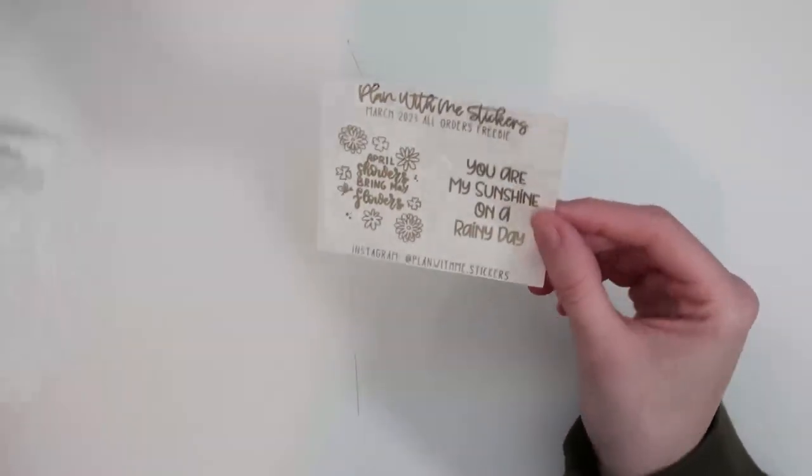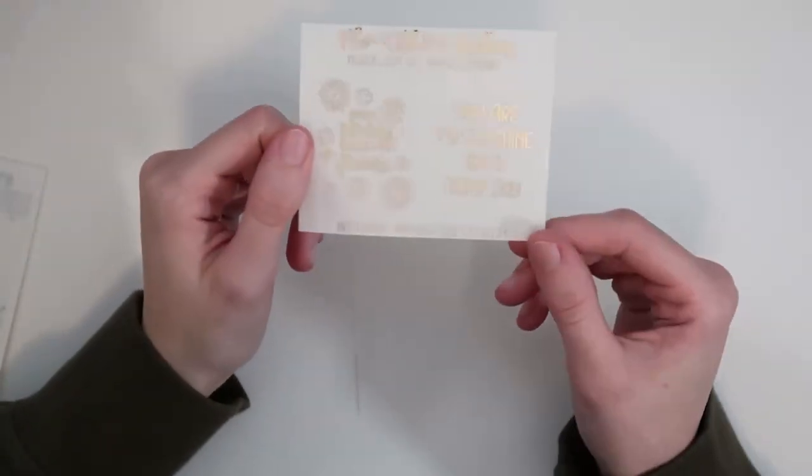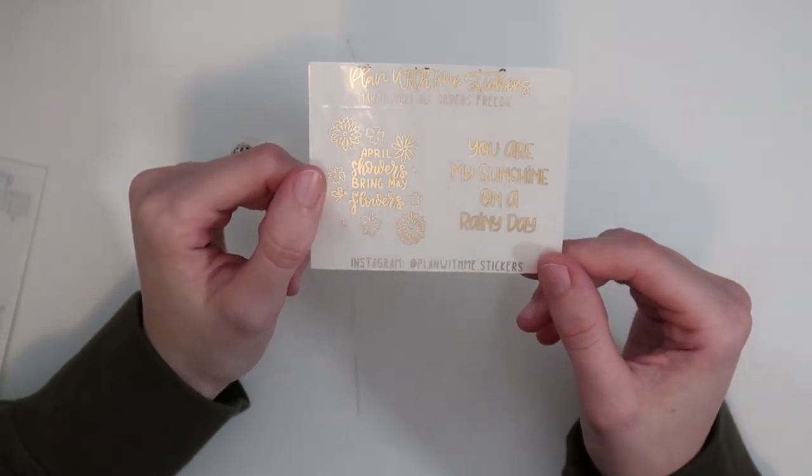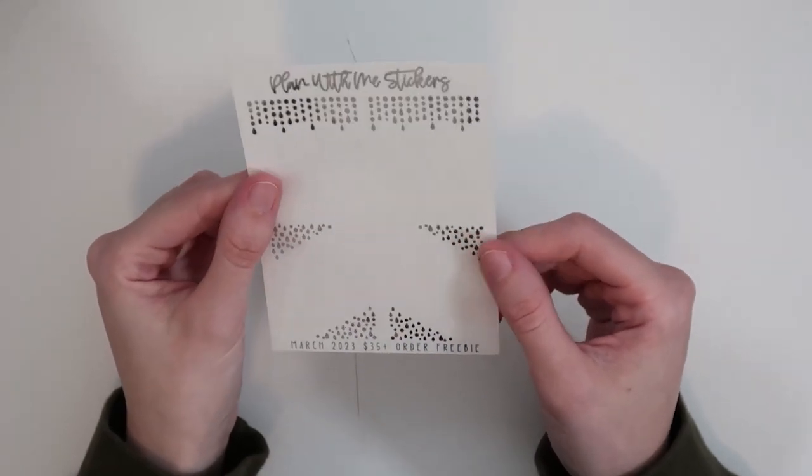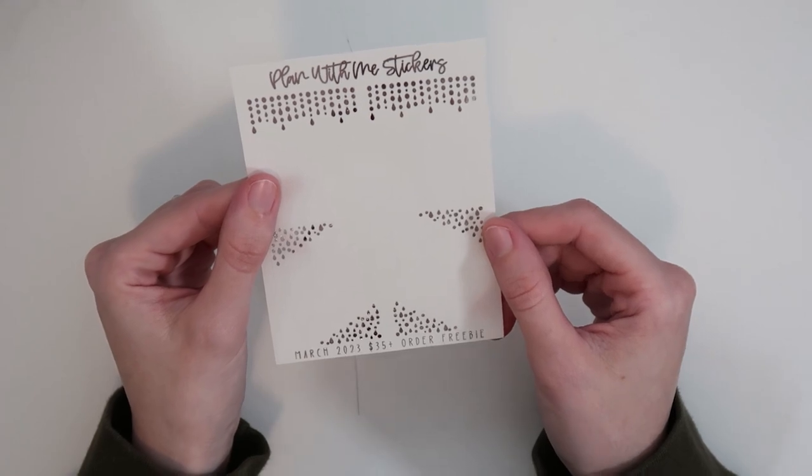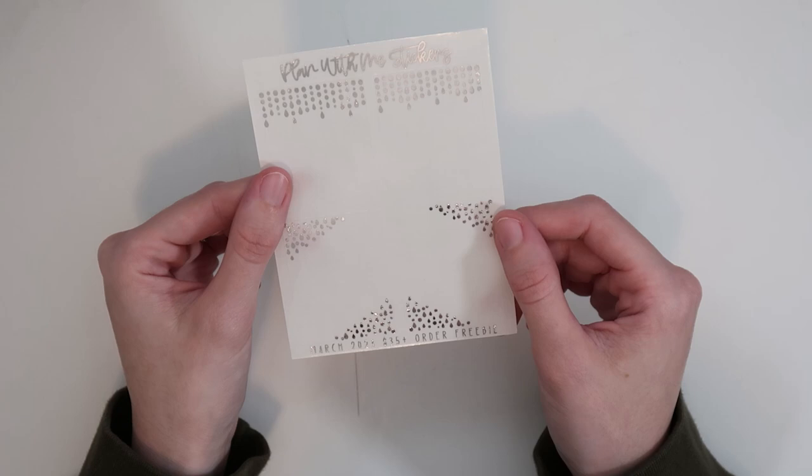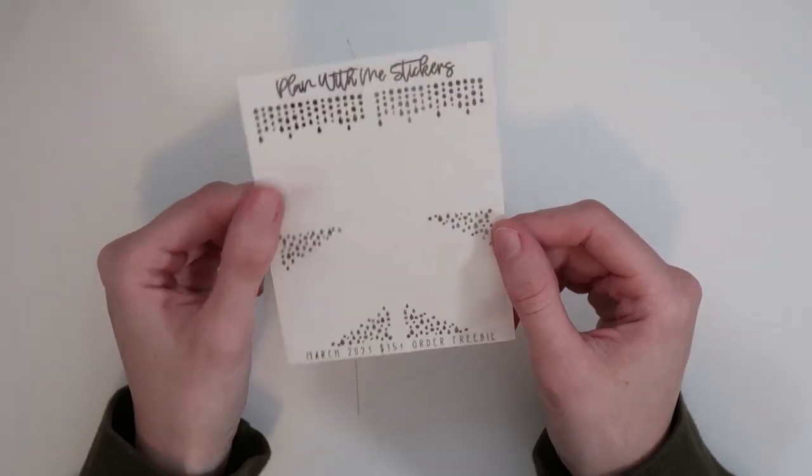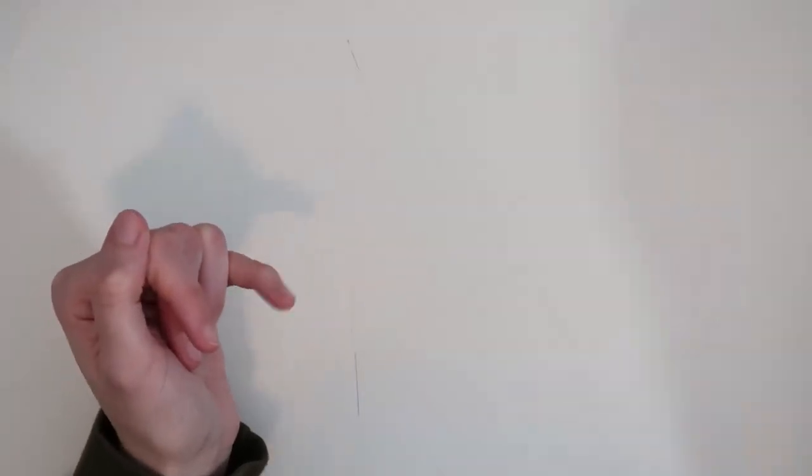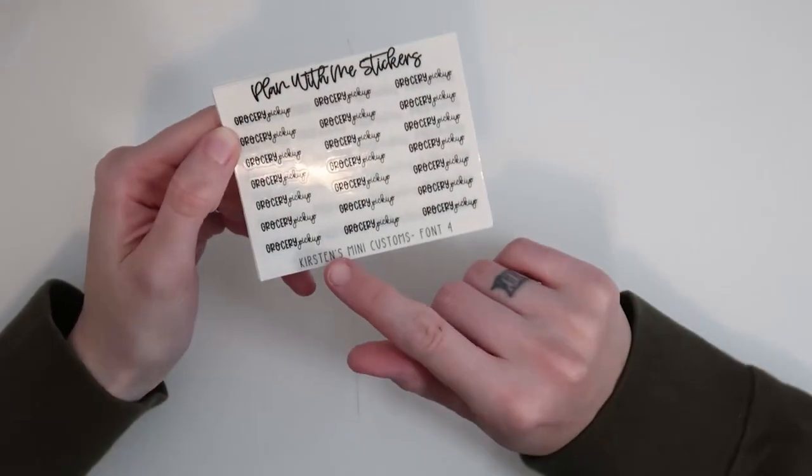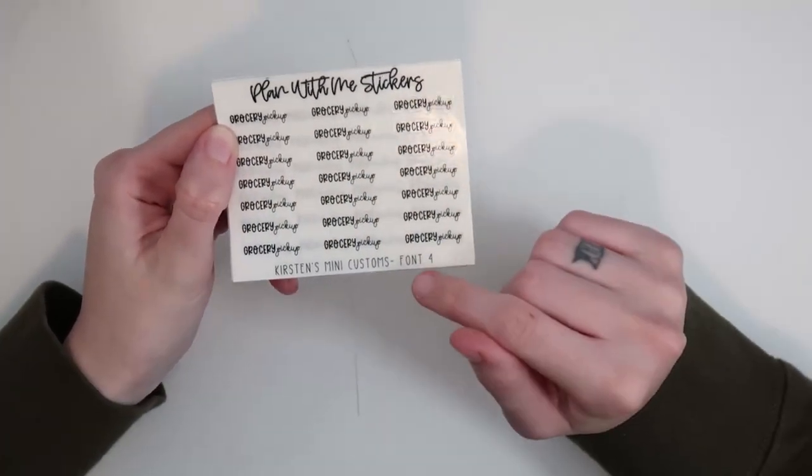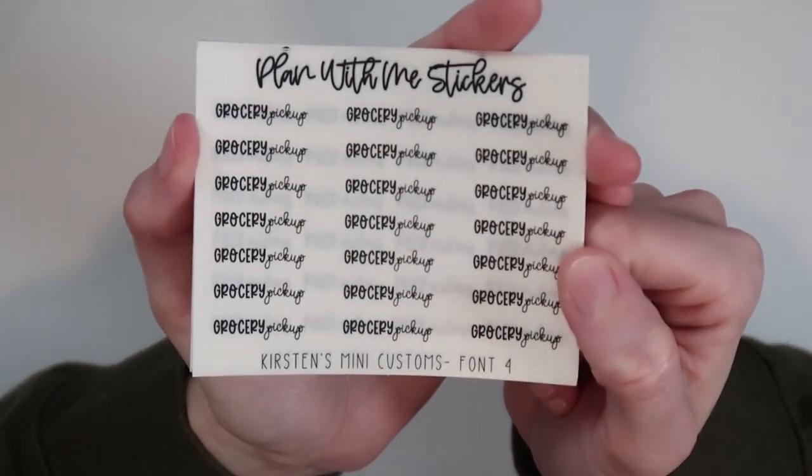And then I do have some freebies. I did put in the notes that I wanted to receive Domi's freebie. This is in like a sparkly hollow. She has a full box overlay that I'm obsessed with that says let the good times roll. And then you have some scripts here. Game night, plan, read, relax, nap, and TV time. I felt like I was going to use all of this.